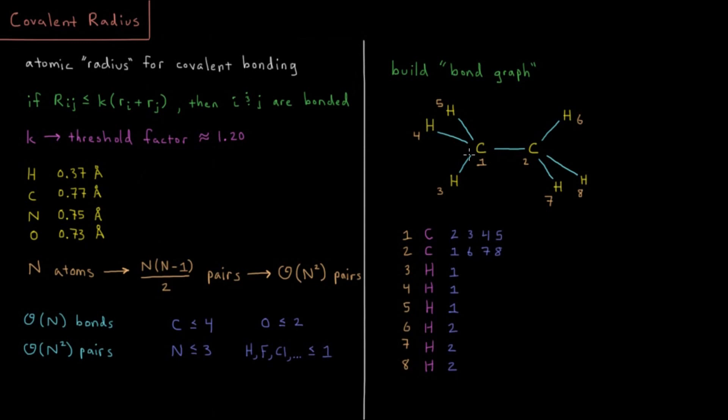So if we imagine we have a molecule here like maybe this ethane molecule, we have this chemical intuition that there should be a bond or a single bond between this carbon and these hydrogens, between this carbon and these hydrogens, and between each of the two carbons. And we also have this intuition that these hydrogens are not bonded to one another. So the reason that is, is because effectively we imagine that these hydrogens and these carbons have this kind of radius to them that if you're not within a certain sphere of this atom, then you're not going to be bonded to that atom.